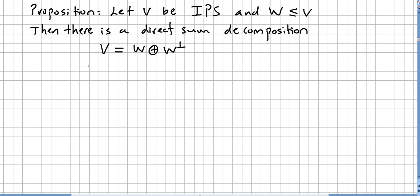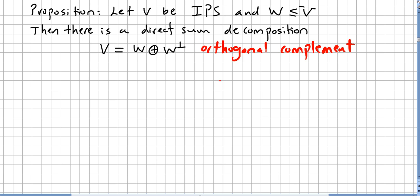In this video we are going to prove this proposition. Let V be an inner product space and W a subspace of V. Then there is a direct sum decomposition V equals W direct sum the orthogonal complement. So if we have a subspace of a space, it is quite easy to use that subspace and its orthogonal complement to get a direct sum.